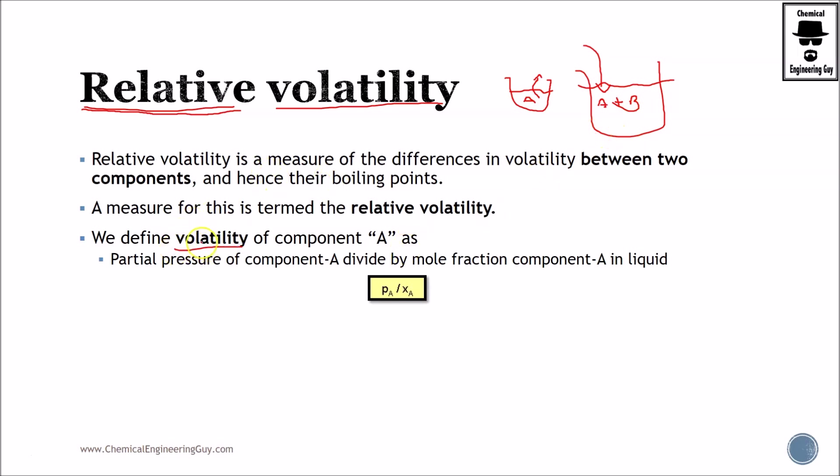Remember that for volatility we have the following definition: the volatility of A equals the partial pressure of component A divided by the molar fraction of component A in the liquid. The partial pressure of A is the total pressure times the molar fraction of A, and xA is the total moles of A in the liquid divided by the total moles in the mixture.